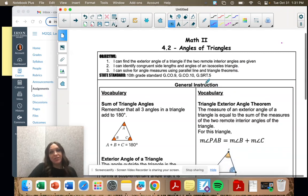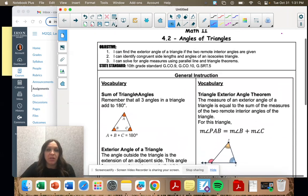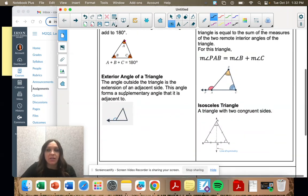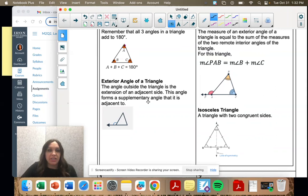So 4.2, we're looking at triangles, and there's some stuff you should be familiar with. All the angles in a triangle add to 180. Remember that. We are going to look at what we call exterior angles.